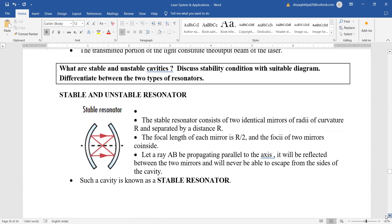Very common question is what are stable and unstable cavities. This is the diagram of a stable reflector or a resonator where it is consisting of two identical mirrors of radii of curvature R and separated by R. Focal length of each mirror.